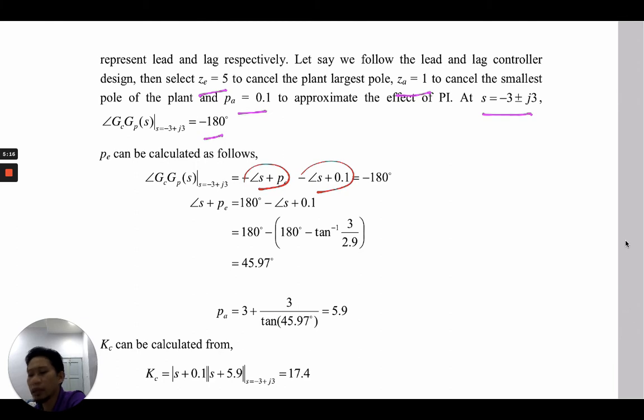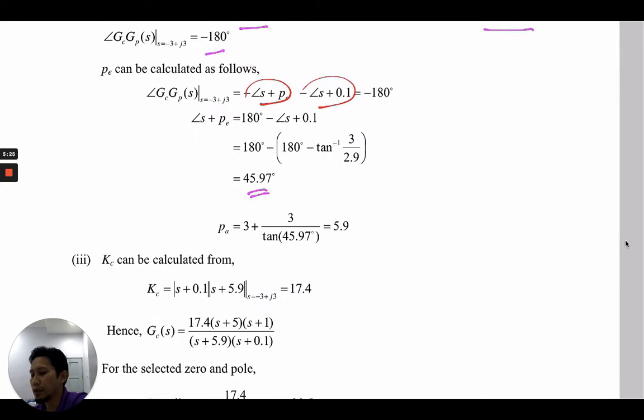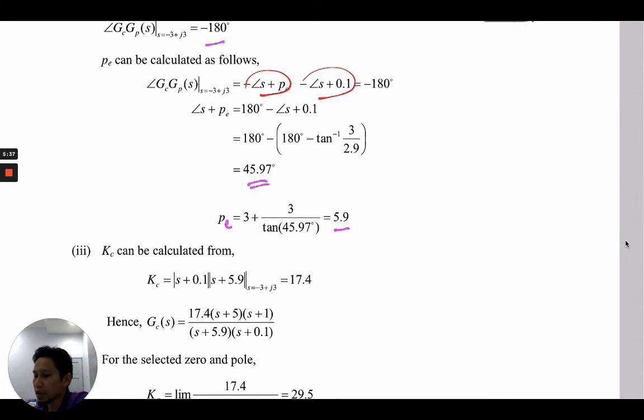We want to find the angle of PE, so we rearrange the equation and find the angle of PE equals 45.97 degrees. From the angle we can calculate the value of PE, so we get PE value equals 5.9.